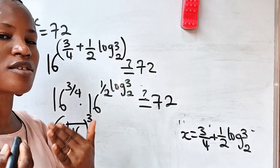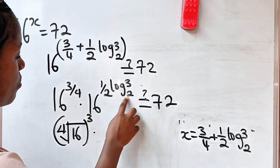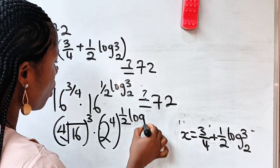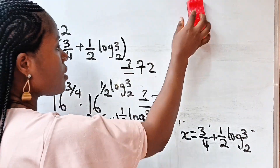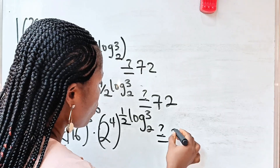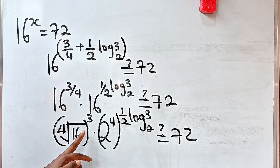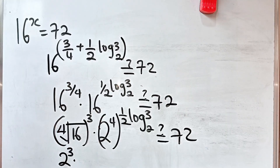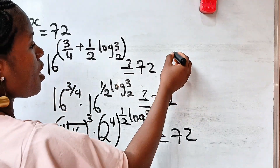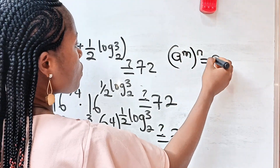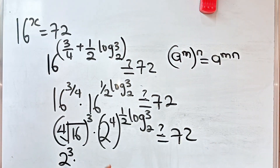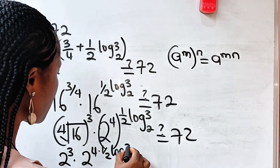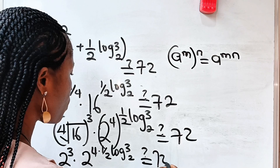So the expression becomes: fourth root of 16 raised to the power of 3, multiplied by — now 16 is the same as 2 to the power of 4, so I rewrite to have the same base — 2 to the power of 4, raised to the power of one half log 3 base 2. Now, the fourth root of 16 is 2, so what we have is 2 to the power of 3. Is this really equal to 72?